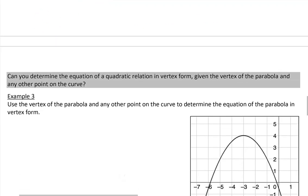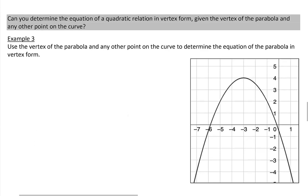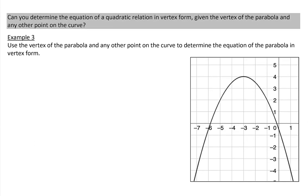And finally, can you determine the equation of a quadratic relation in vertex form given the vertex of the parabola and any other point on the curve? So for this one, you're going to start with vertex form: y equals a times x minus h squared plus k. We look for the vertex, which we see here is negative 3 and 4. We're going to sub our vertex in for h and k.